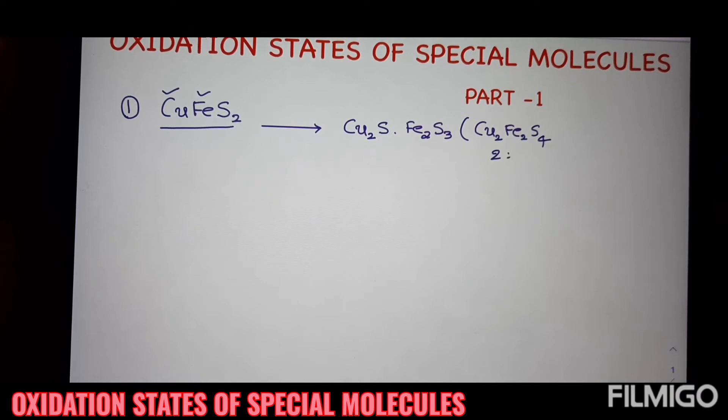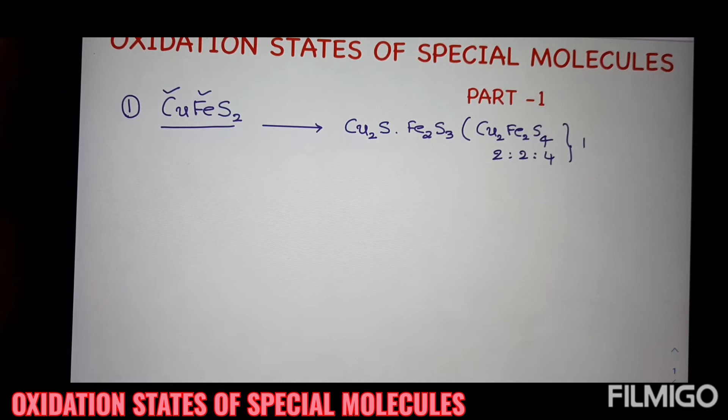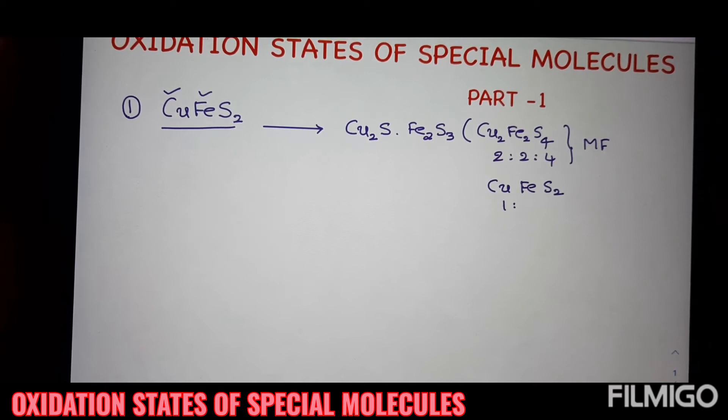Its accurate formula is Cu2S, Fe2S3, simply written as Cu2Fe2S4. 2 is to 2 is to 4 is the ratio of the molecules. But in CuFeS2, the formula contains 1 is to 1 is to 2.